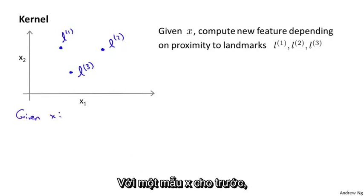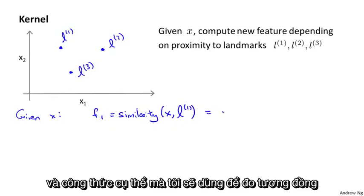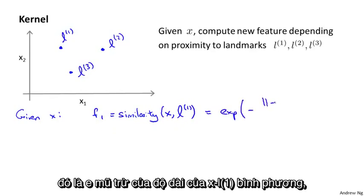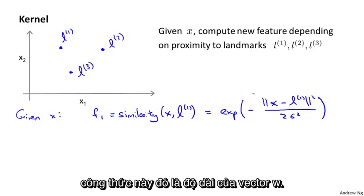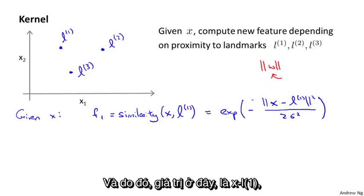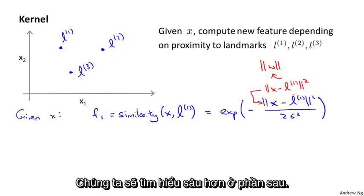Given an example x, let me define my first feature f one to be some measure of the similarity between my training example x and my first landmark. The specific formula I'm going to use is e to the minus of the length of x minus l one squared divided by two sigma squared. This x minus l one is actually just the squared Euclidean distance between the point x and the landmark l one.